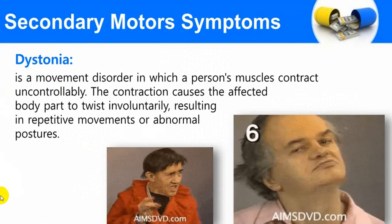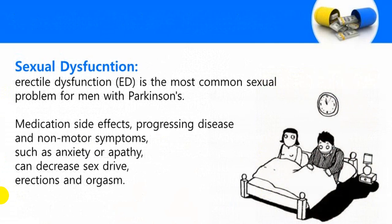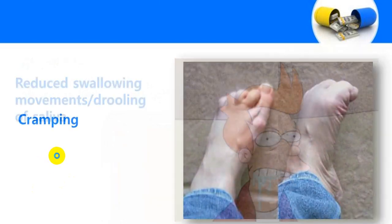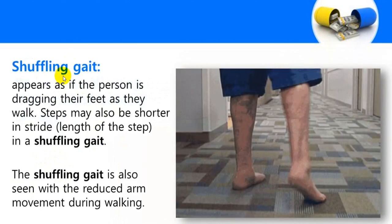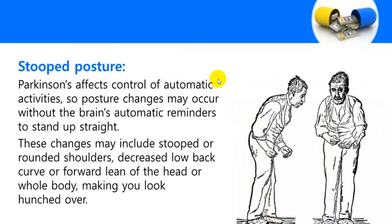Dystonia and micrographia are motor symptoms; mask-like face is a motor symptom; sexual dysfunction is a non-motor symptom. Akathisia is a movement disorder characterized by feeling of inner restlessness and inability to stay still. The person can't stay steady and is constantly restless with movements occurring. Person can complain of cramping, reduced swallowing, drooling of saliva. Short shuffling gait is a classical symptom. Speech disturbances, particularly monotonous speech. Stooped posture.